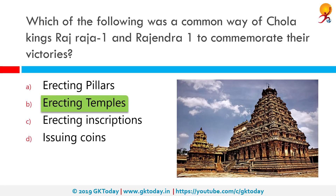There are three great Chola temples of the 11th and 12th century: the Brihadishwara temple of Thanjavur, the temple of Gangaikonda Choliswaram, and the Airavatesvara temple of Dharasuram. These were all temples erected to commemorate victories.